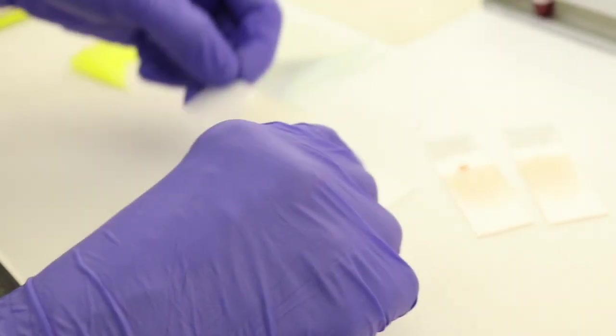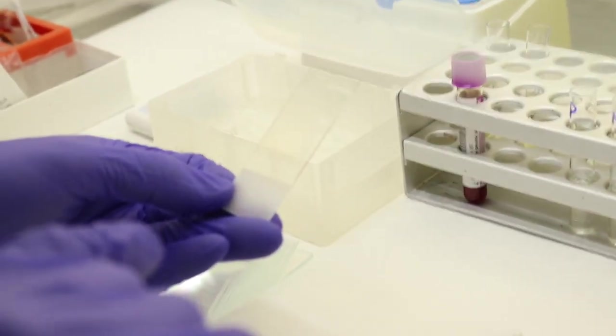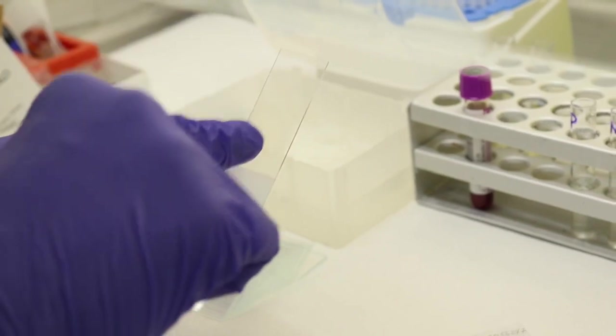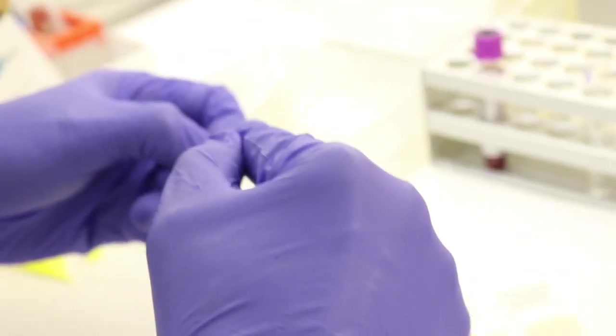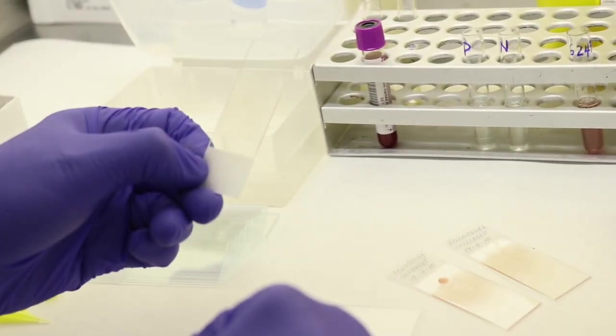This is how a blood film looks like—it's not perfect, but it's good enough. Ideally, it should have a tongue shape, comprising at least two-thirds of the smear. If it's too long or too short, it's not acceptable.